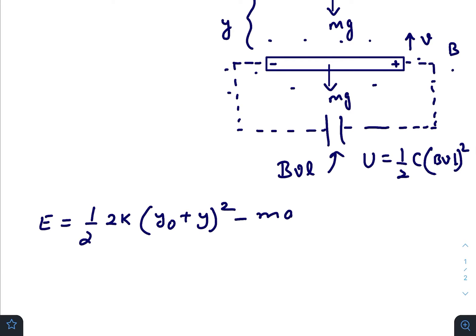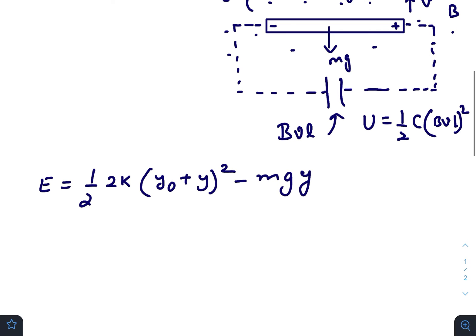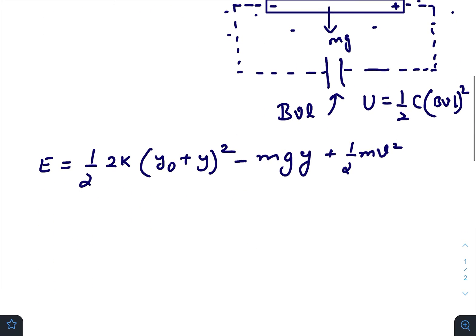Minus gravitational potential energy, plus the kinetic energy of the rod, plus the potential energy that is stored inside the capacitor. This whole energy will be constant.